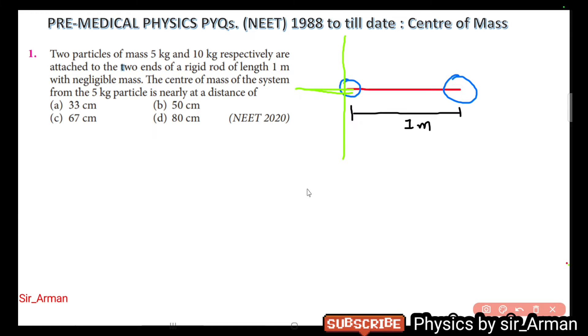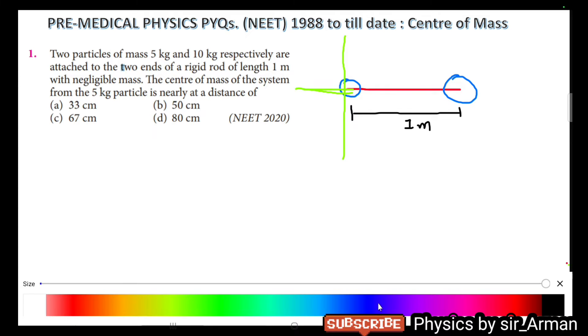Whenever it is asked to find the center of mass from a particular particle or mass, we have to take that mass at the origin. So this is our 5 kg mass and this is our 10 kg mass. If we consider the 5 kg mass at the origin, then the 10 kg mass is placed at a distance of 1 meter.